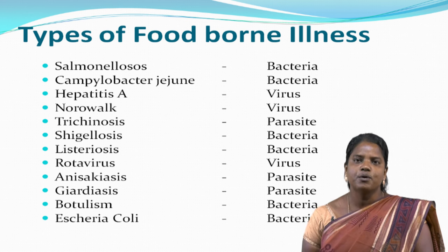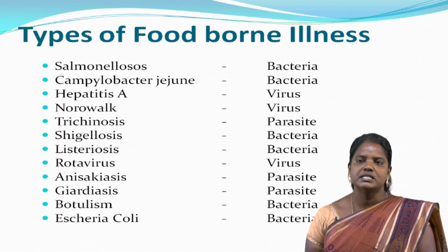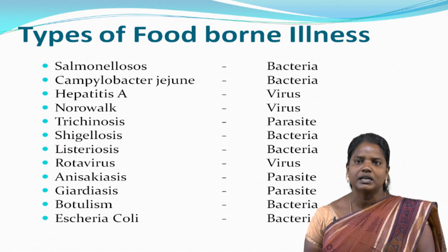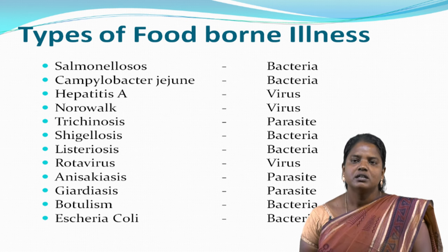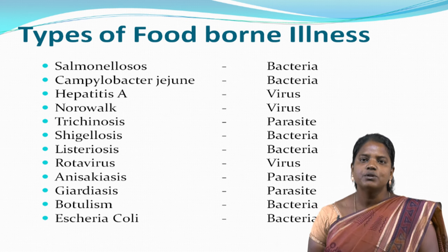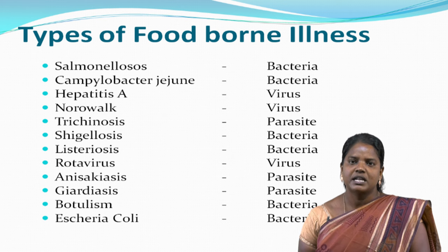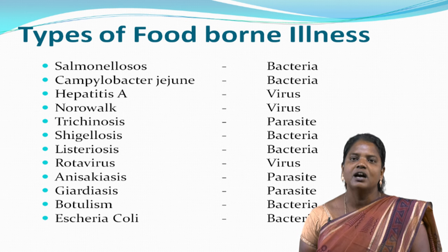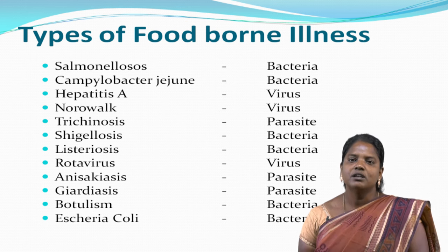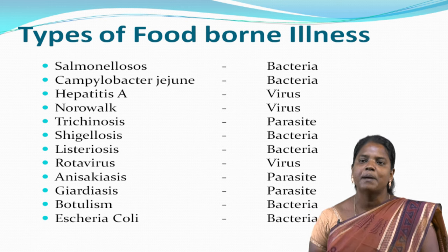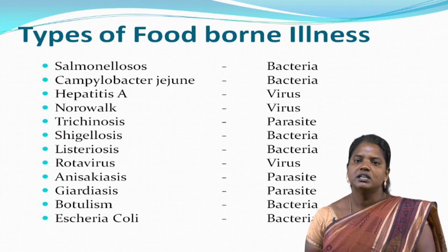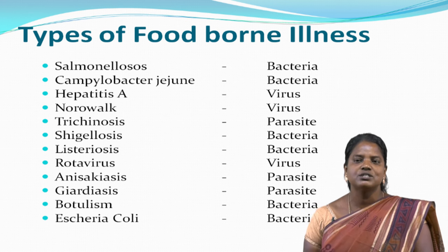Types of foodborne illnesses and their causative agents: Salmonellosis — causative agent is the bacterium Salmonella. Campylobacteriosis — causative agent is the bacterium Campylobacter jejuni. Hepatitis A virus is the causative agent of a viral foodborne illness. Norovirus is another viral agent. Trichinosis and Shigellosis — causative agents are parasites and bacteria respectively. Listeriosis — causative agent is Listeria monocytogenes. Rotavirus is a viral causative agent. Anisakiasis and Giardiasis — caused by parasites and protozoans. Botulism — causative agent is the bacterium Clostridium botulinum. E. coli or Escherichia coli is a bacterial causative agent.